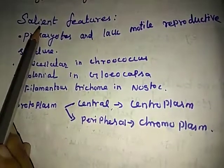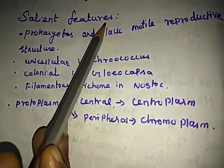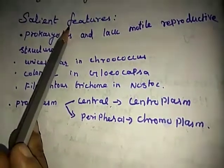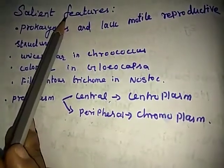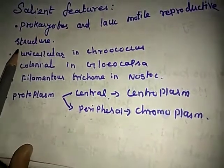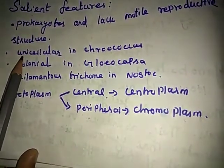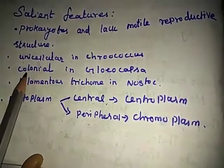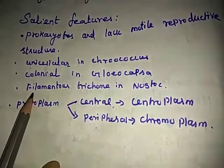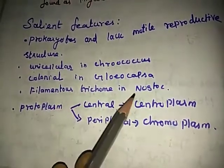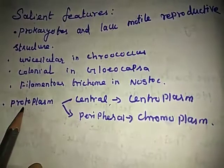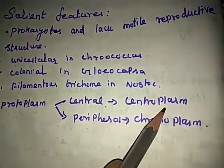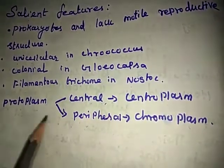Next is the cell features of Cyanobacteria. Members of this group are prokaryotes and lack motile reproductive structures. Most are unicellular like Chroococcus, colonial like Gloeocapsa, or filamentous trichome like Nostoc. The protoplasm is differentiated into a central region called centroplasm and an outer peripheral region.